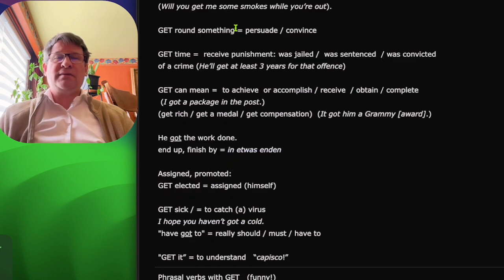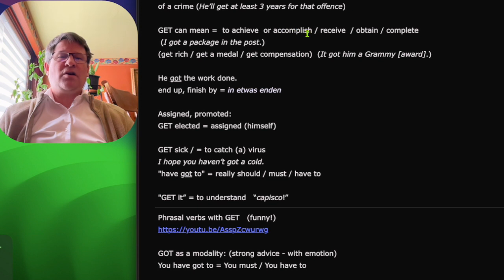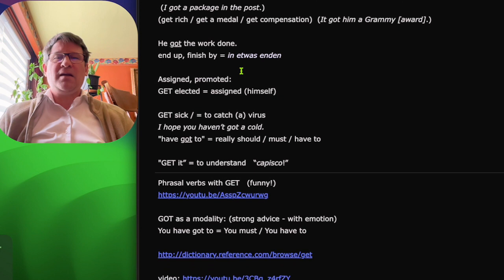Get something can be to buy something. We get round something is actually to persuade or convince someone. Get can mean to achieve, accomplish, receive, obtain, complete. He got the work done or he got promoted, elected, and so on.